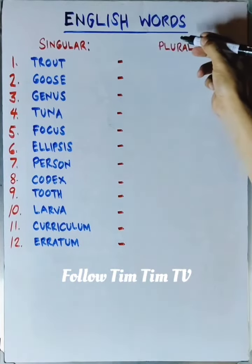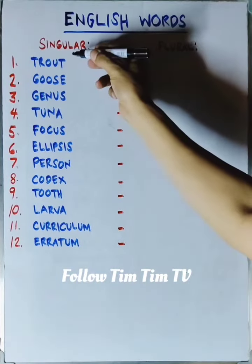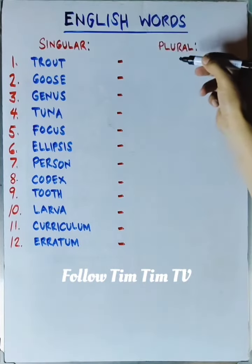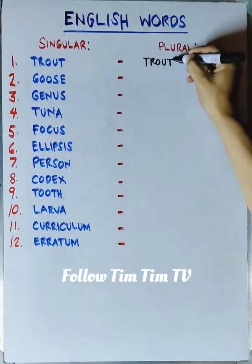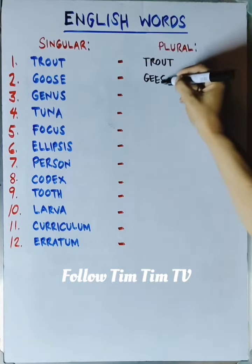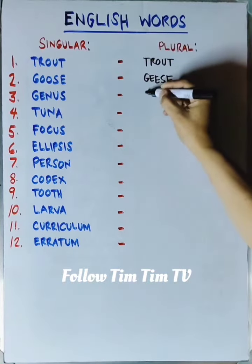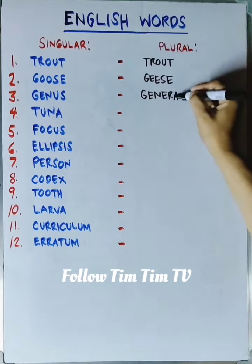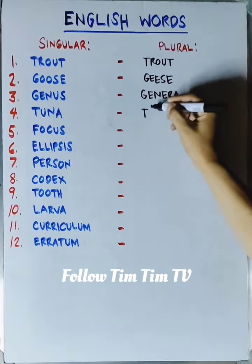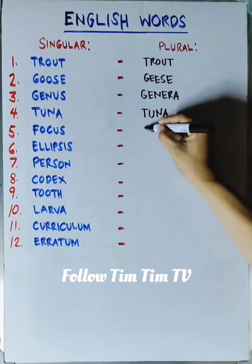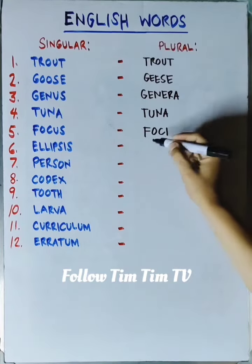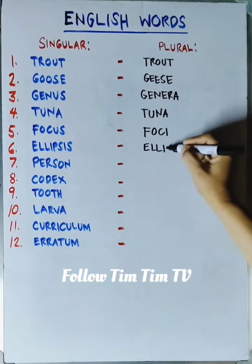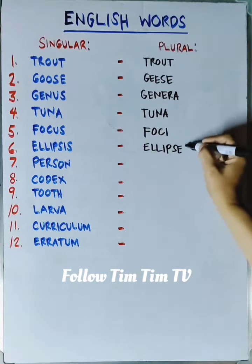English words, singular to plural. Trout is trout. Goose is geese. Genus is genera. Tuna is tuna. Focus is foci. Ellipsis is ellipses.